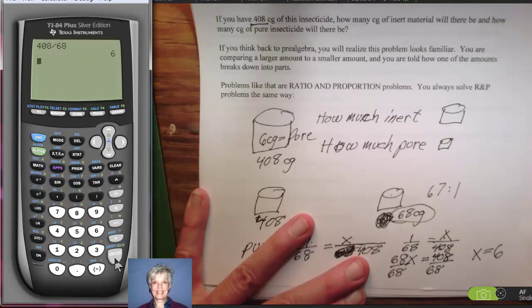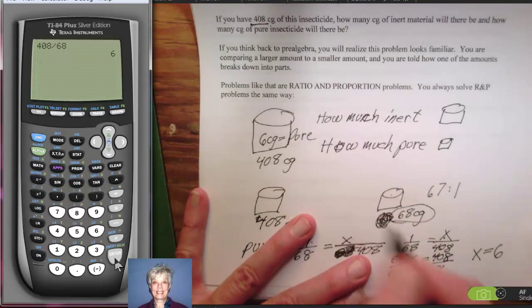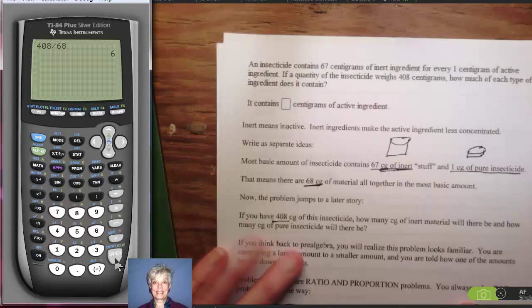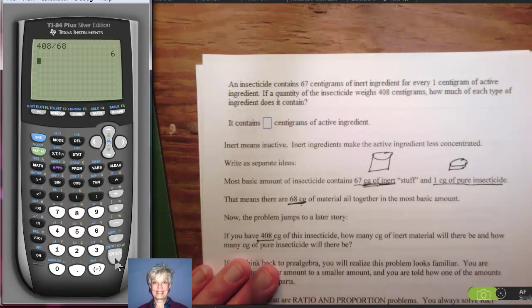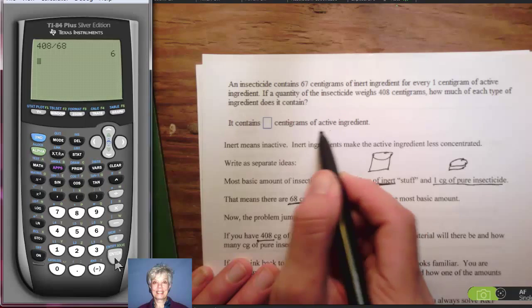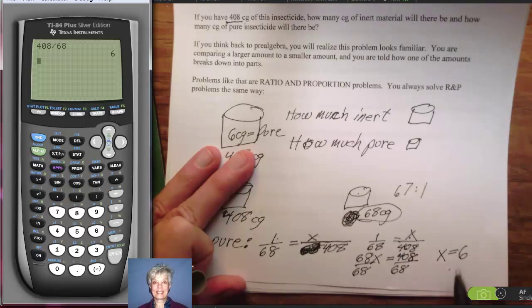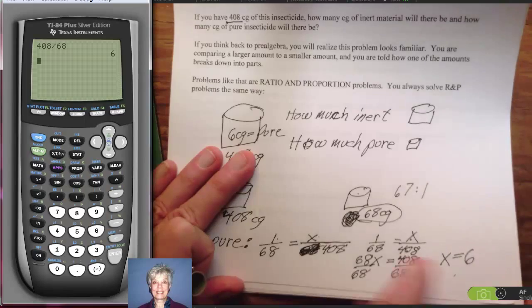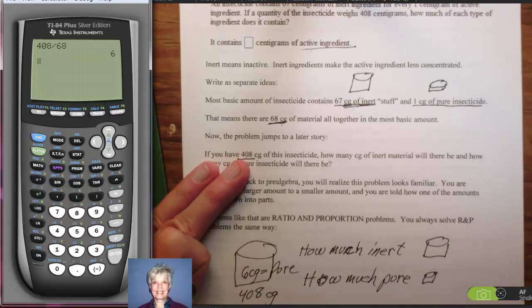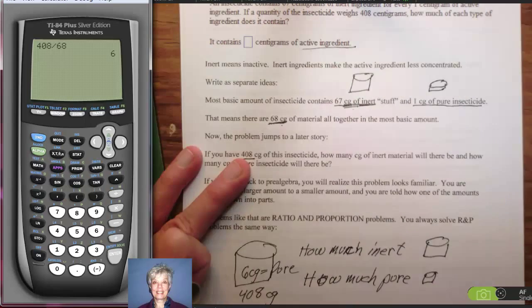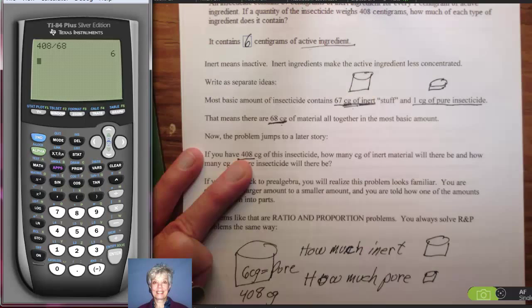I now know that 6 of these centigrams are pure material. How much is inert? Well, that would be 408 minus 6, right? Because if there are 408 centigrams altogether and 6 of them are the pure material, then the rest is all going to be inert. So the inert is going to be—well, it doesn't matter, does it? Because, look, that's not what they're asking for. All they're asking for is the centigrams of active ingredient. And we found that when we found x, right here.